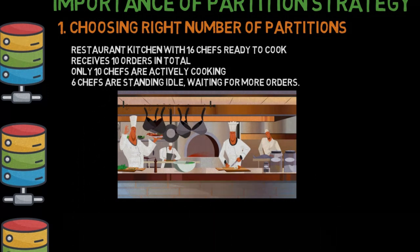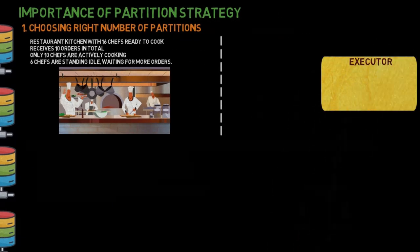Since each order can only be handled by one chef, only 10 chefs are actively cooking, while the remaining six chefs are standing idle, waiting for more orders. This is inefficient because the kitchen is not fully utilizing all its chefs.